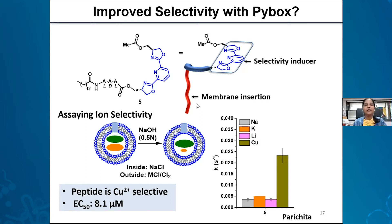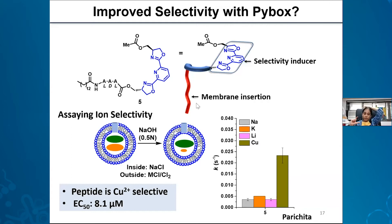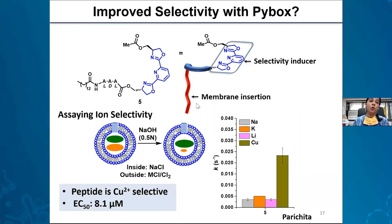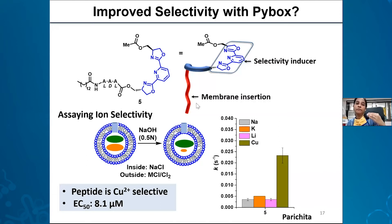Vishan Rai asks: can ion channel formation and ion transportation differentiate the type of cells? Yes — the next level would be for the peptides to distinguish based on the composition of the membrane. We have been focusing on the peptide-ion interaction; the next level of challenge would be to look at the peptide-lipid interaction. Depending on the nature of the membrane, one can potentially tune peptides to go to a specific type of cell. The next step I would take is to look at membrane-peptide interactions.